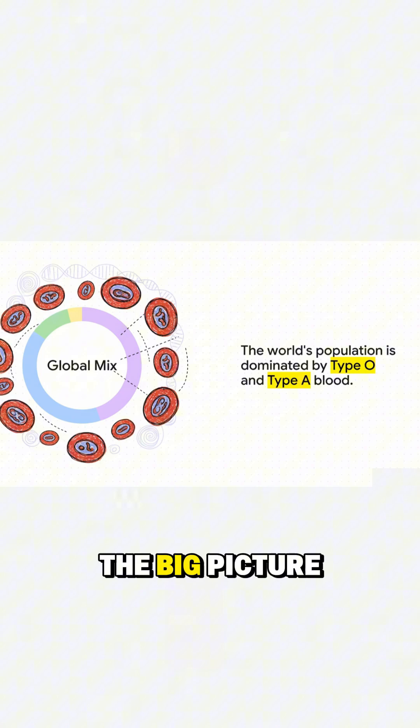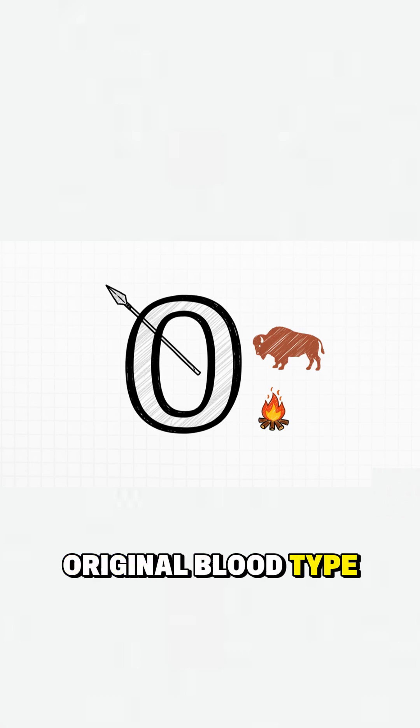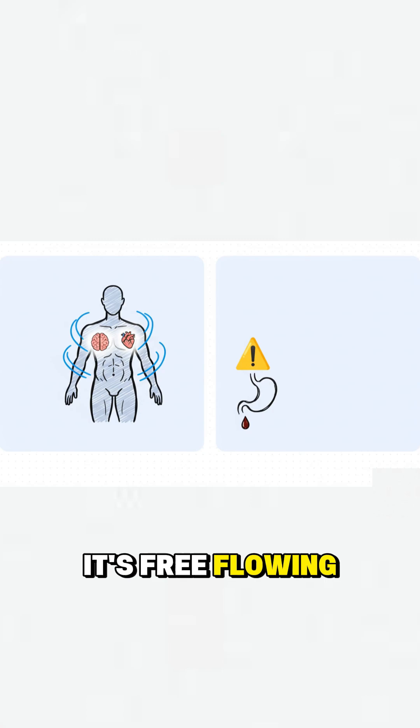First up, the big picture. You'll see most of us are either type O or A. This is the original blood type, a real throwback to our hunter-gatherer days. Its free-flowing nature is great for your heart and brain, but watch out for ulcers.